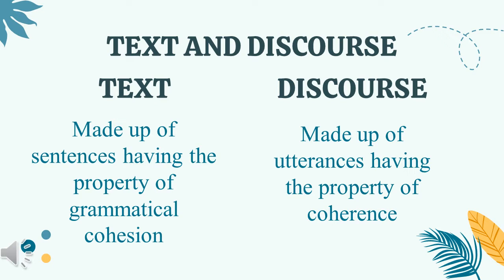On the other hand, discourse is made up of utterances having the property of coherence. When we say coherence, it has something to do with the overall meaning of the text. We really need to check if we convey certain significance in what we are trying to persuade, inform, or tell our readers. That is the difference between a text and a discourse.